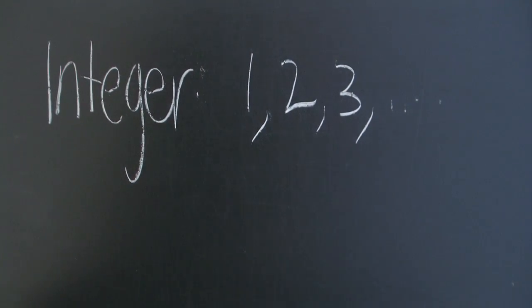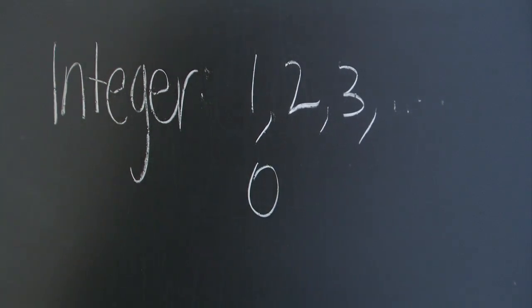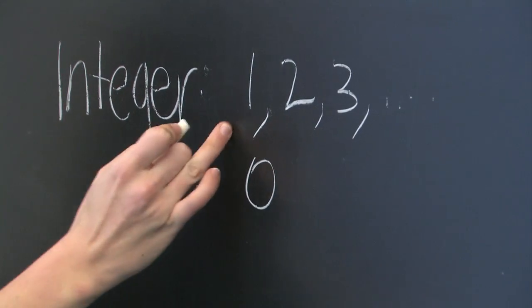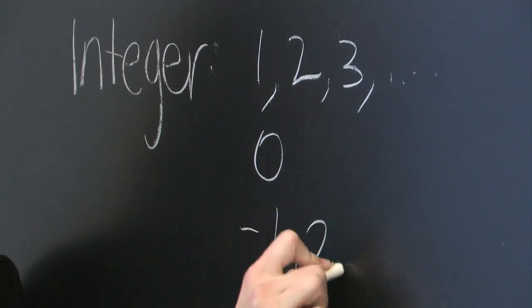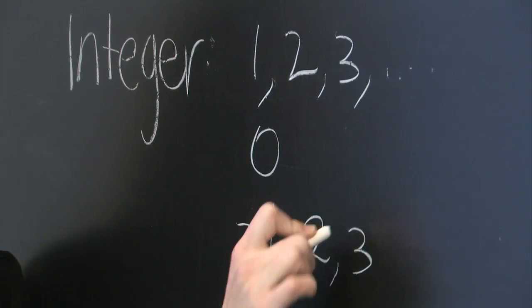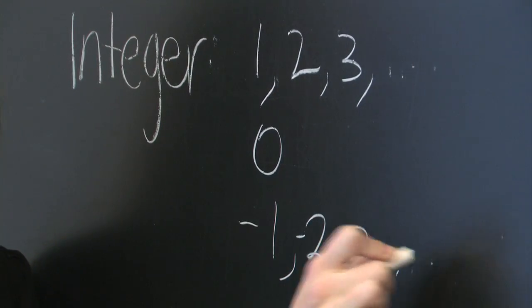It also includes 0 and the opposites of the counting numbers, so minus 1, minus 2, minus 3, and so on.